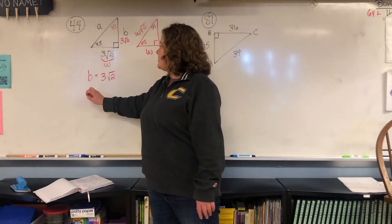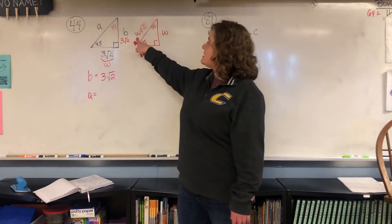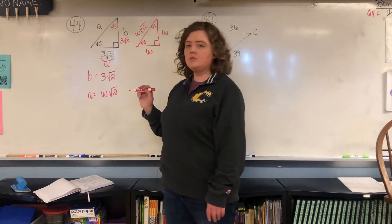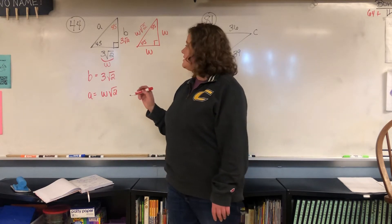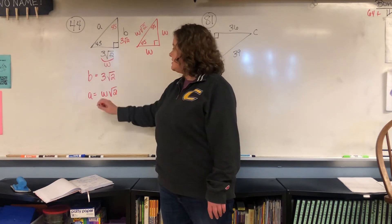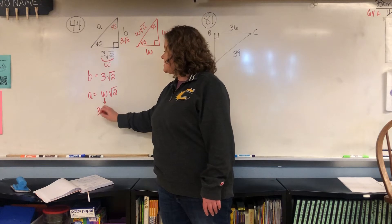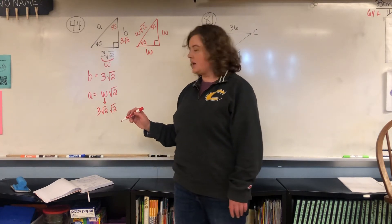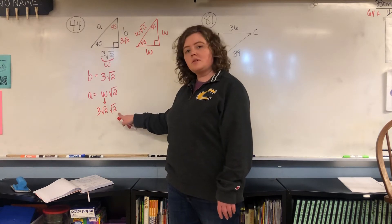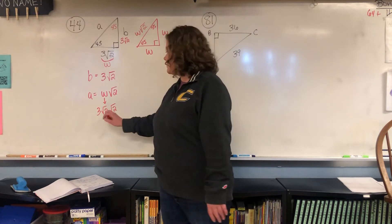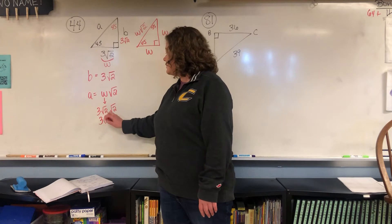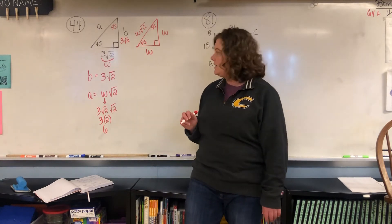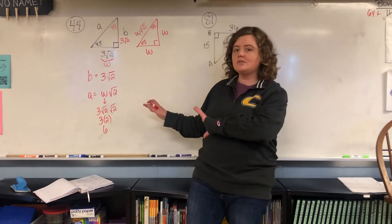Then A, your hypotenuse, would be W times square root of two. So our W this time was three square root of two, and then we bring down that other square root of two. A square root of two times square root of two cancels, and you're left with two. So it's just three times two, which gives you six. That's how you do that problem.